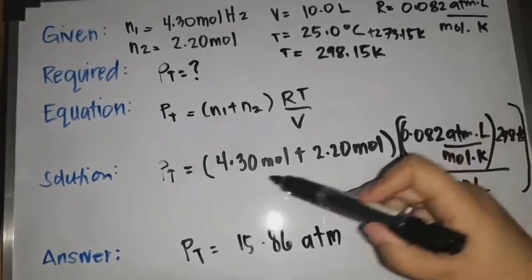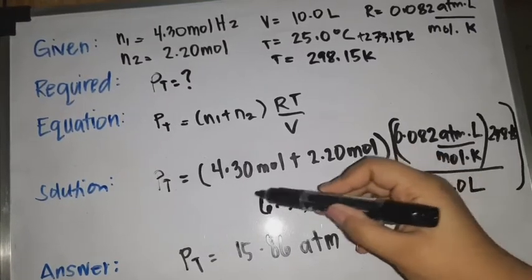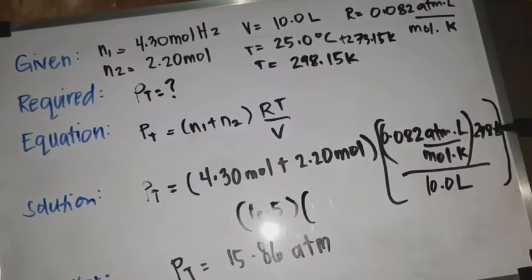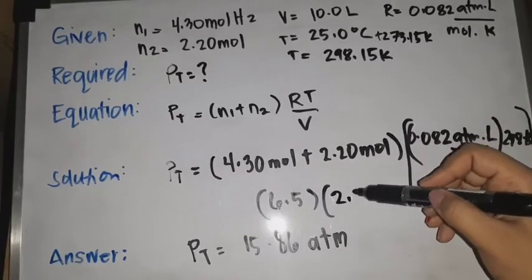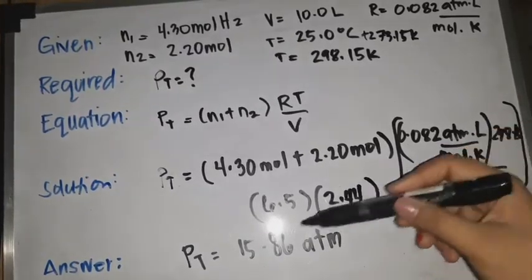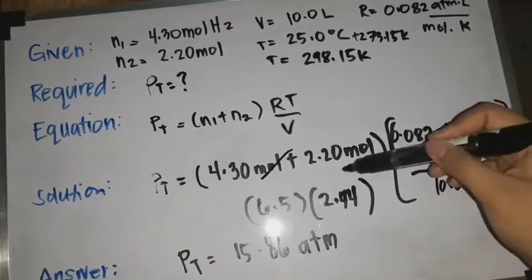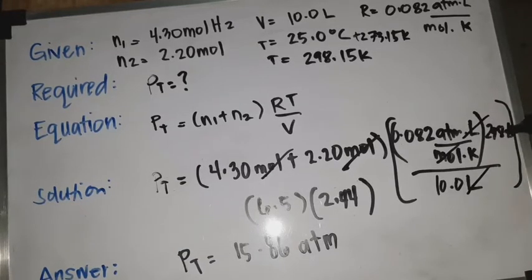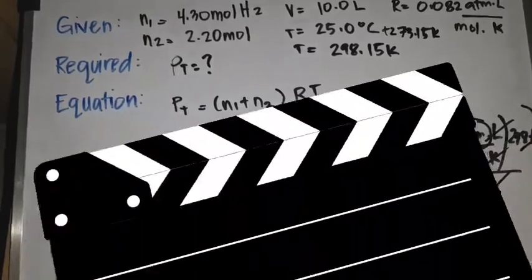To verify: 4.30 plus 2.20 equals 6.5 moles. Then 6.5 multiplied by 0.082 times 298.15 divided by 10 gives approximately 15.86 atmosphere. The units of mole, liter, and Kelvin cancel out, leaving atmosphere as the final unit for total pressure.